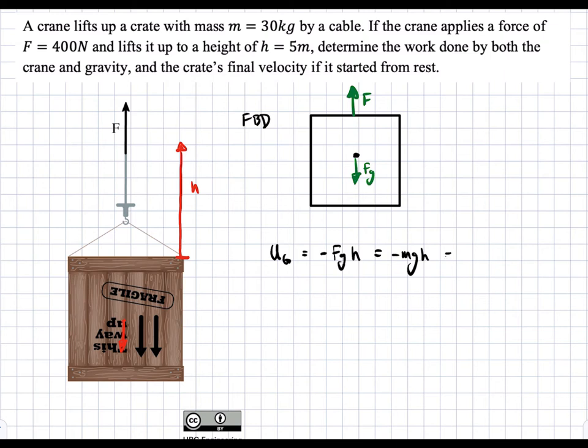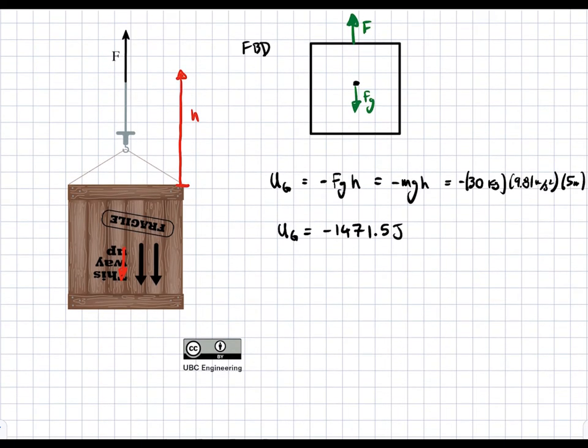And so if we plug in some numbers, we get negative 30 kilograms times G, which is 9.81 meters per second squared times H, which is 5 meters. We get that Ug is going to be equal to negative 1471.5 joules. So this is the work done by gravity.